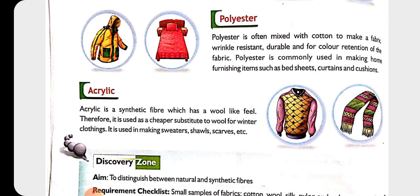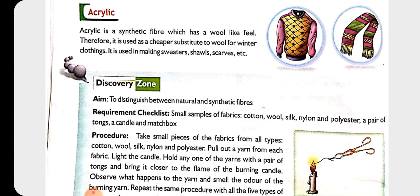The next synthetic fiber is polyester. Polyester is durable, wrinkle resistant, and has good color retention — meaning color does not fade after washing. Polyester is commonly used in making home furnishings like bed sheets, curtains, cushions, etc.